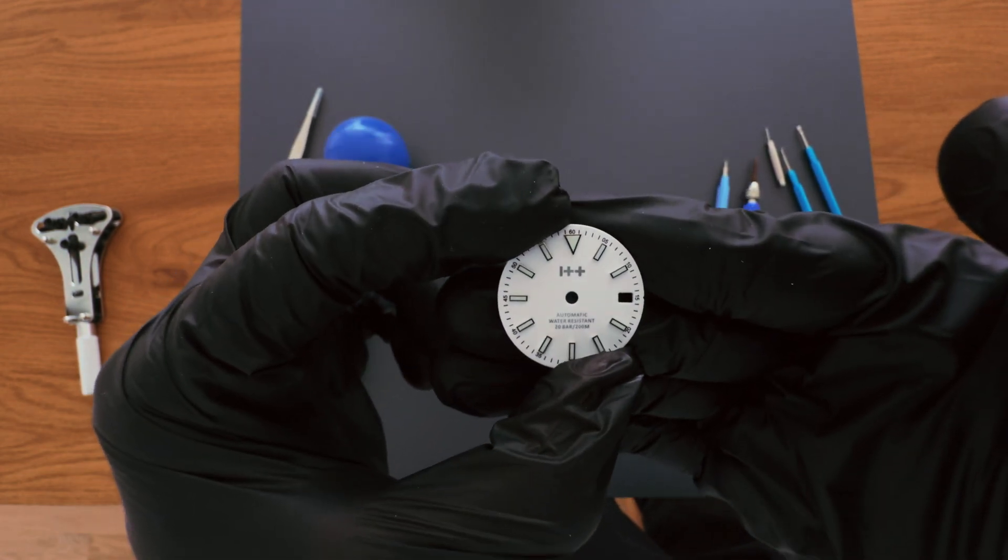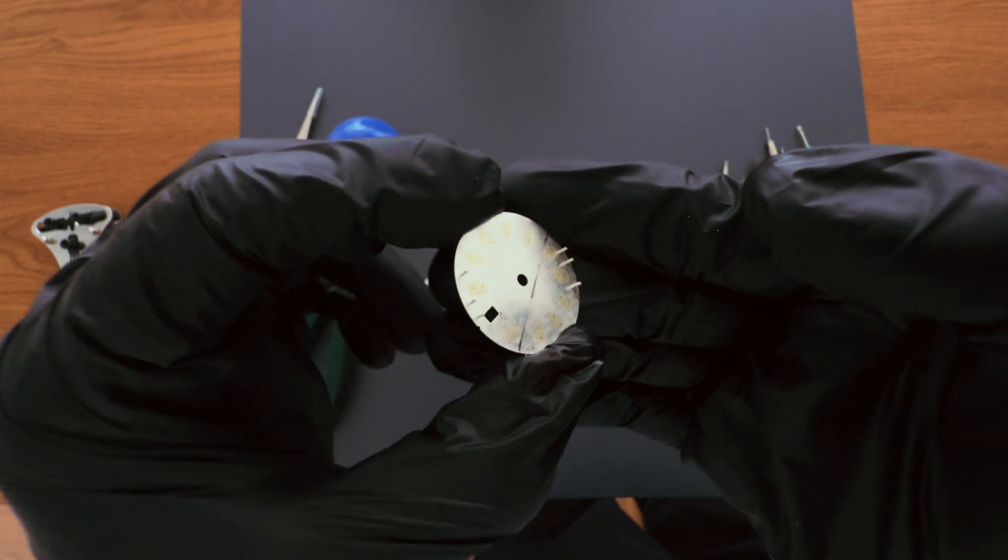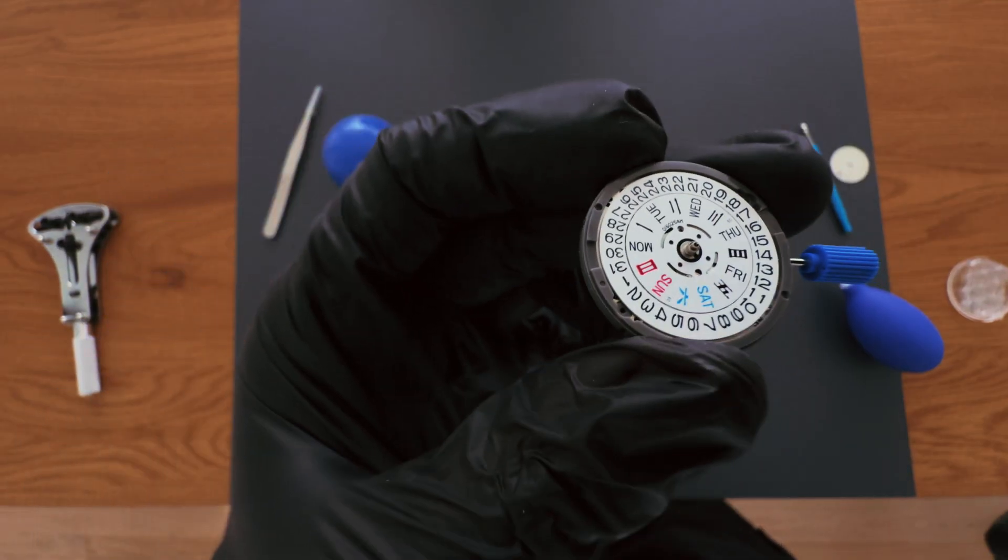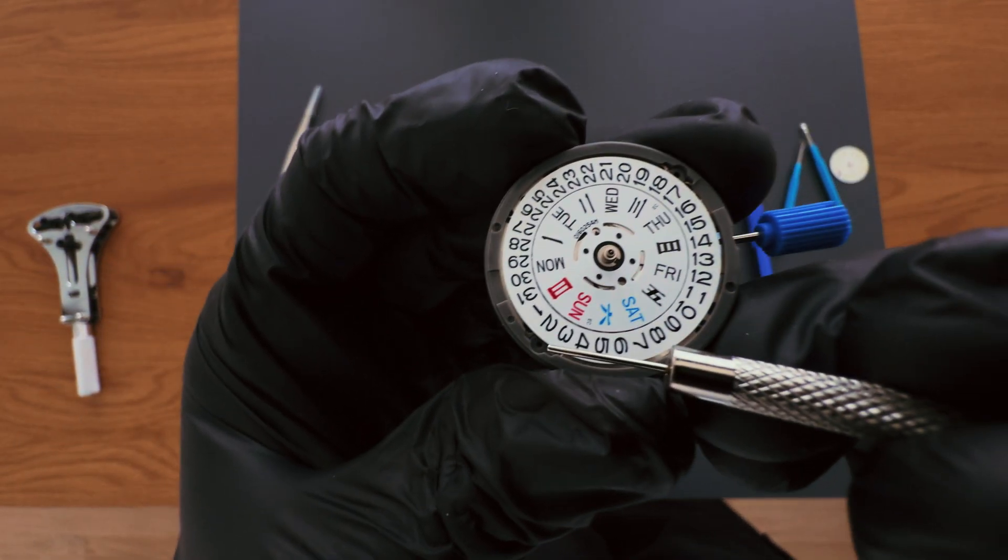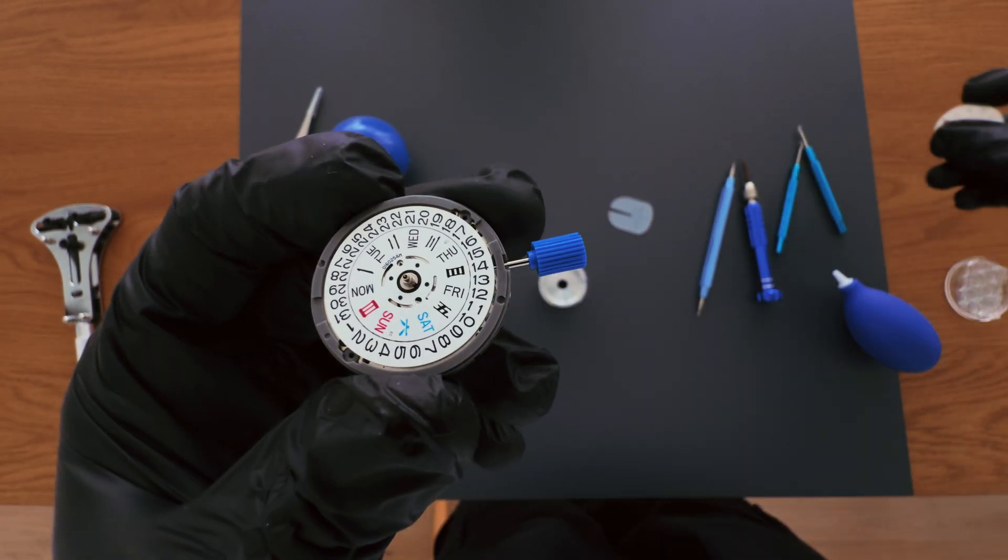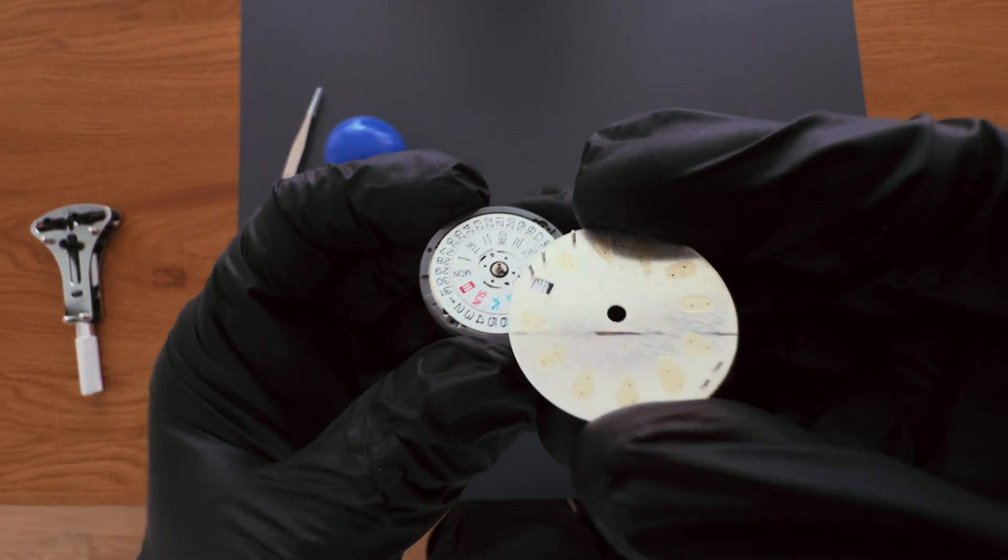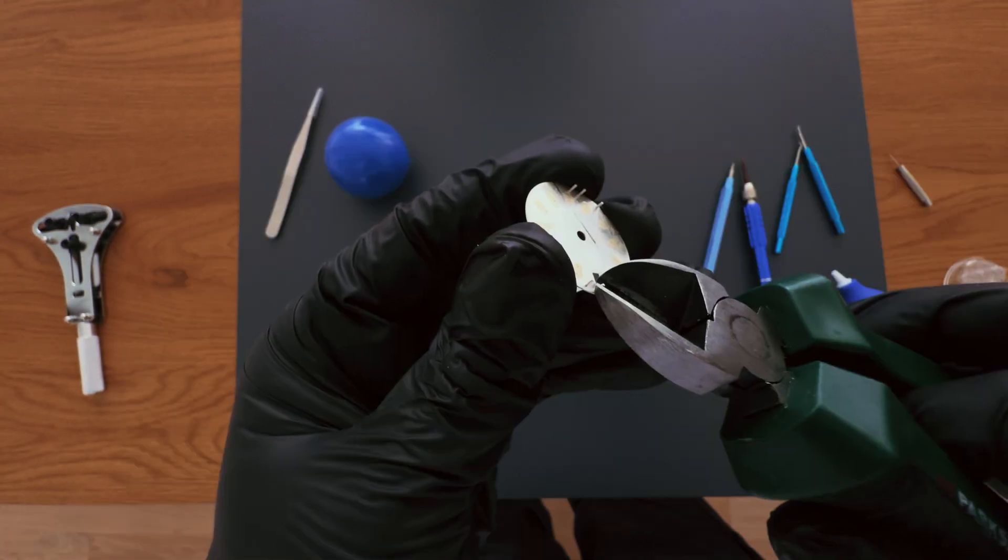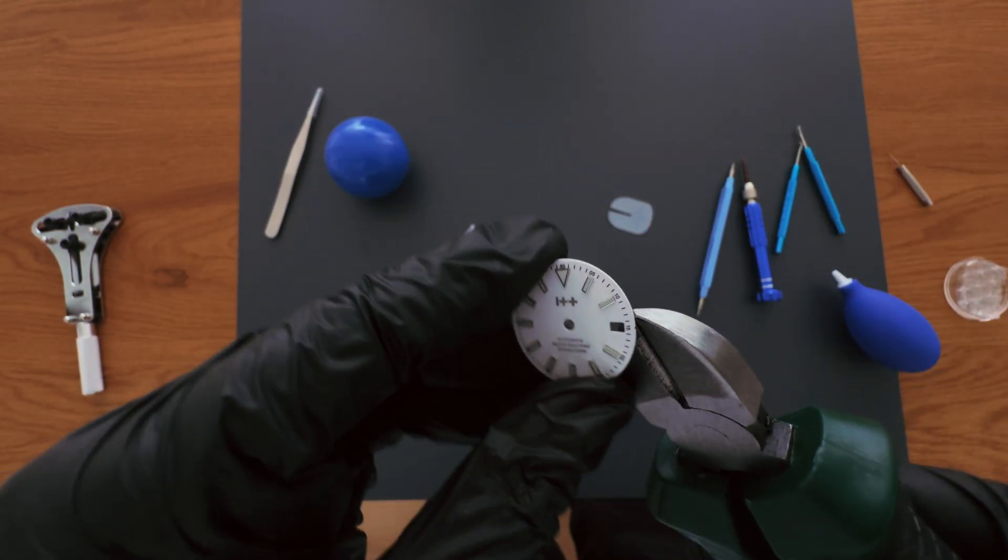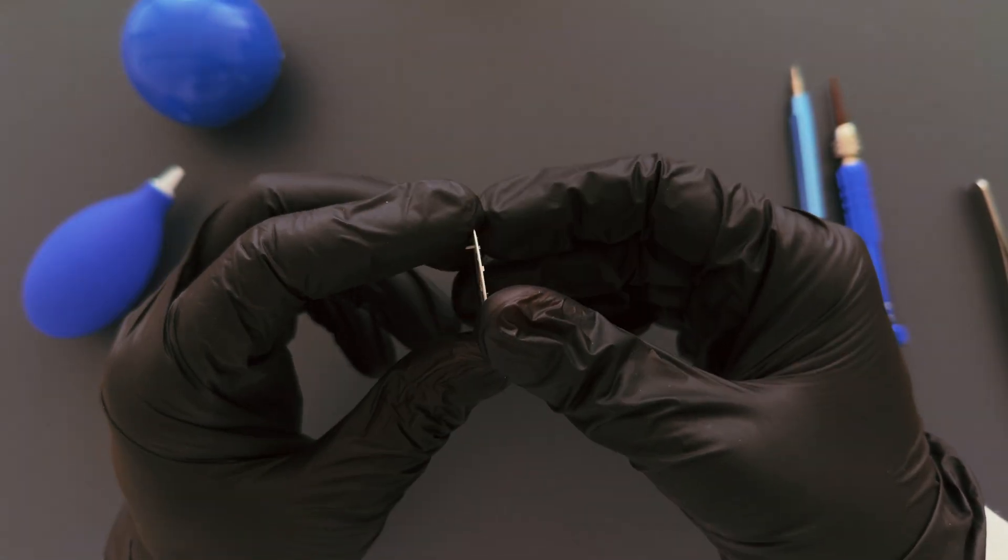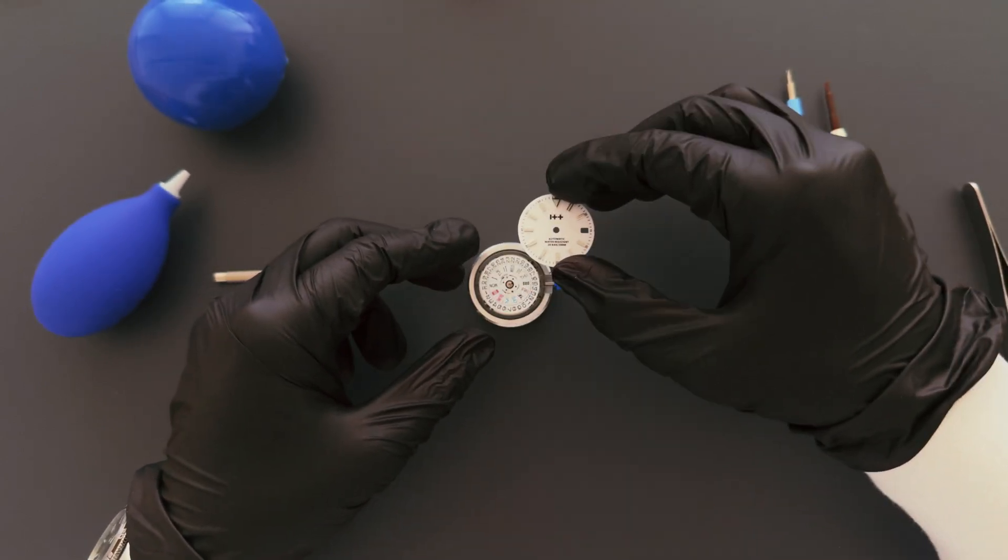Prepare the dial. Every dial has small pegs on the back. Movements usually have two peg holes. If your dial has more than two pegs, you'll need to remove the extra ones. Use cutters to snip the extra pegs, and if needed, file down any bumps left behind. Place the dial on the movement.